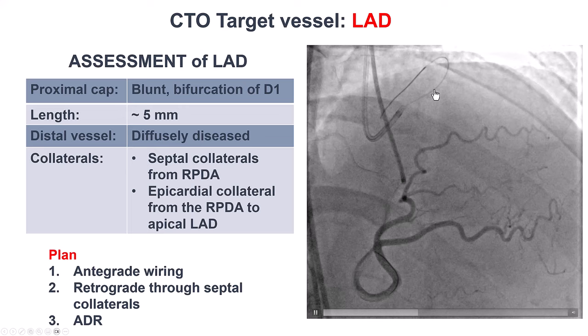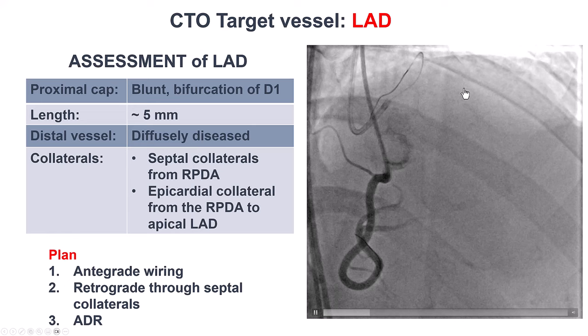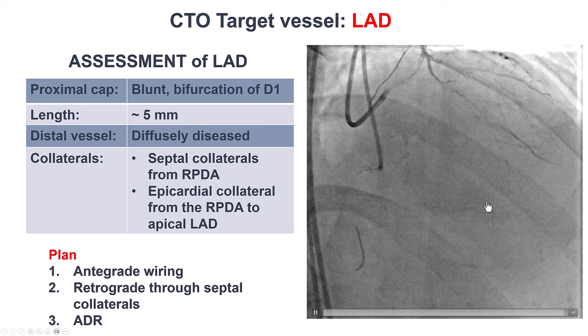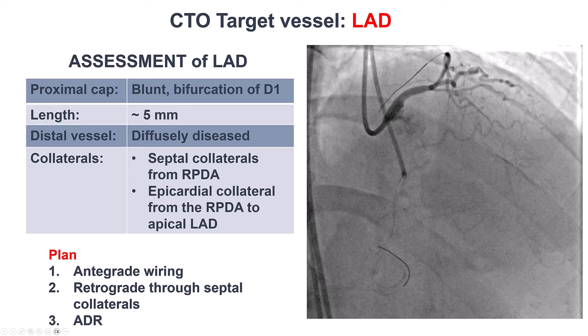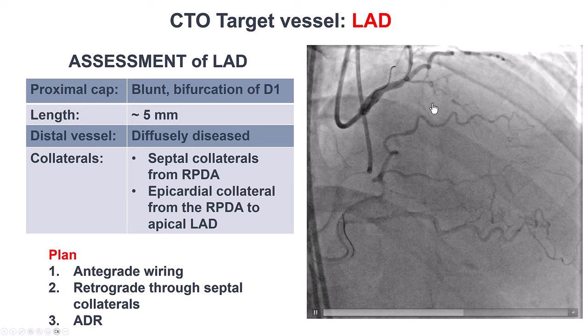We have a CTO of the LAD with short diffusely diseased distal vessels, and septal collaterals coming from the PDA. There are also some epicardial collaterals distally. Our plan was to try to wire antegradely. If that didn't work, go retrograde through septals, and then use ADR as the third option.